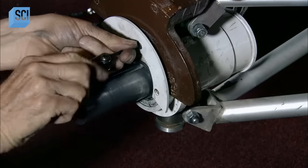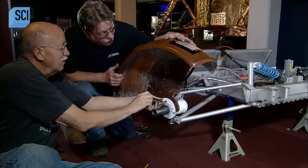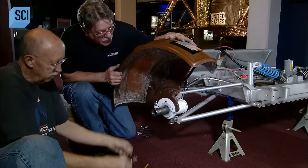The fenders are next. They are extra large to protect astronauts from lunar dust kicked up by the rover.